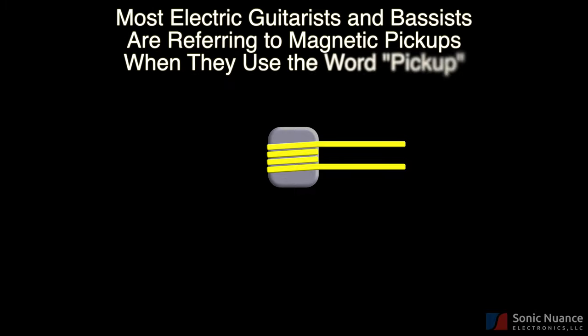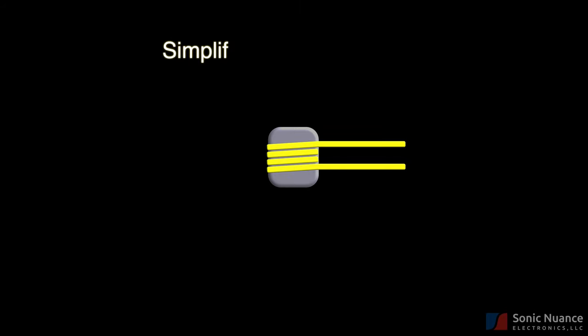In conversations with electric guitarists and bassists, when they're talking about quote-unquote pickups, they're often referring to magnetic pickups. The purpose of any electric guitar or bass is to convert string vibrations, which are physical, into electrical signals.